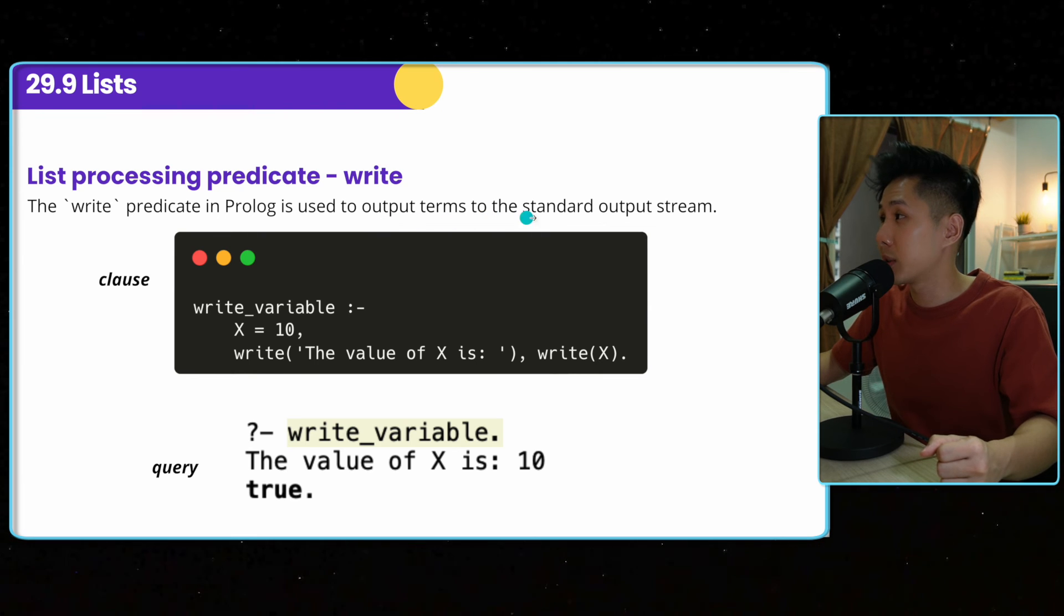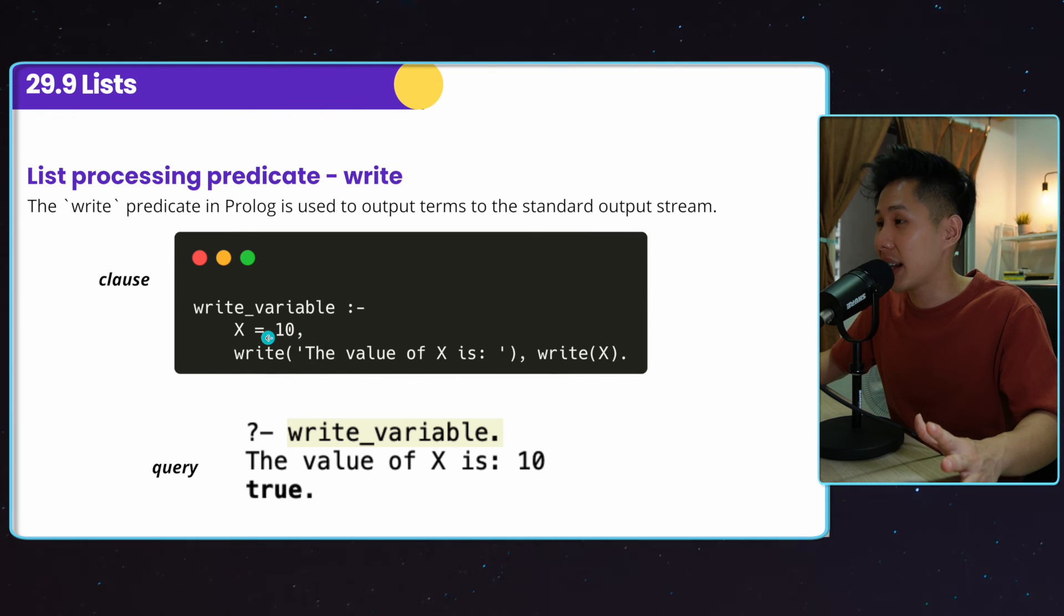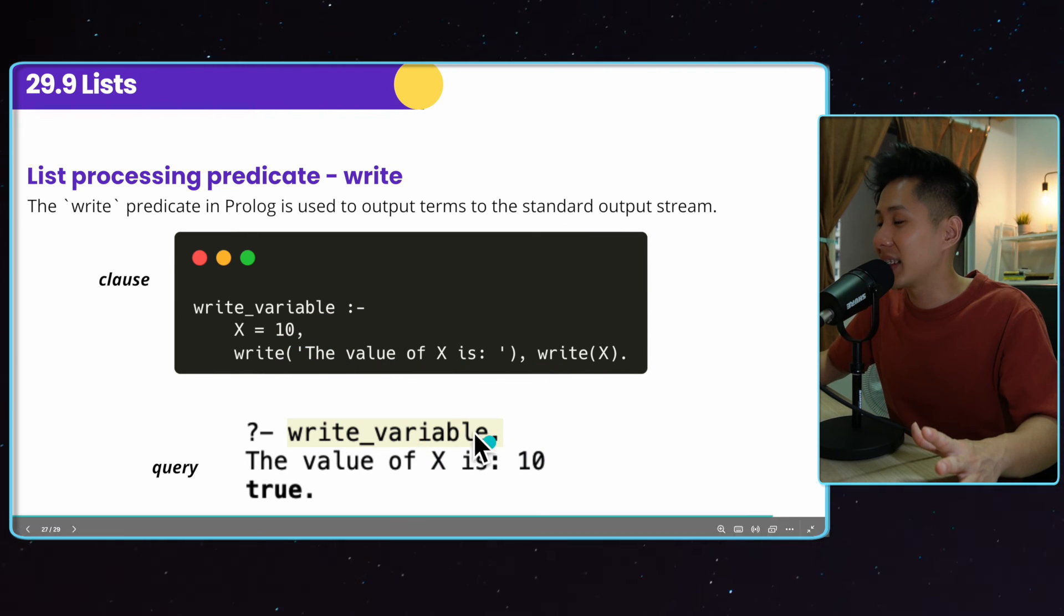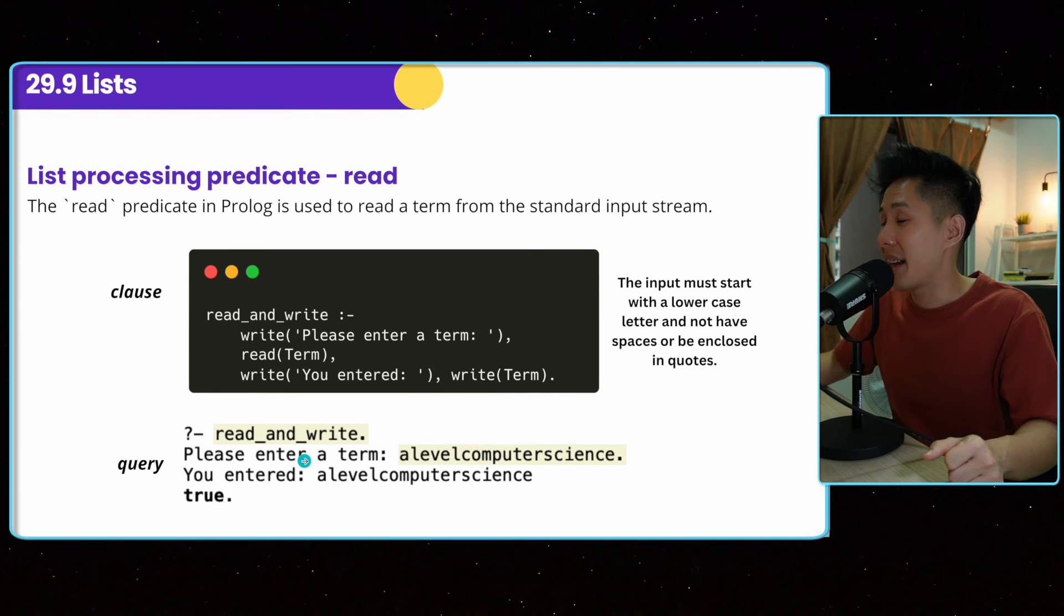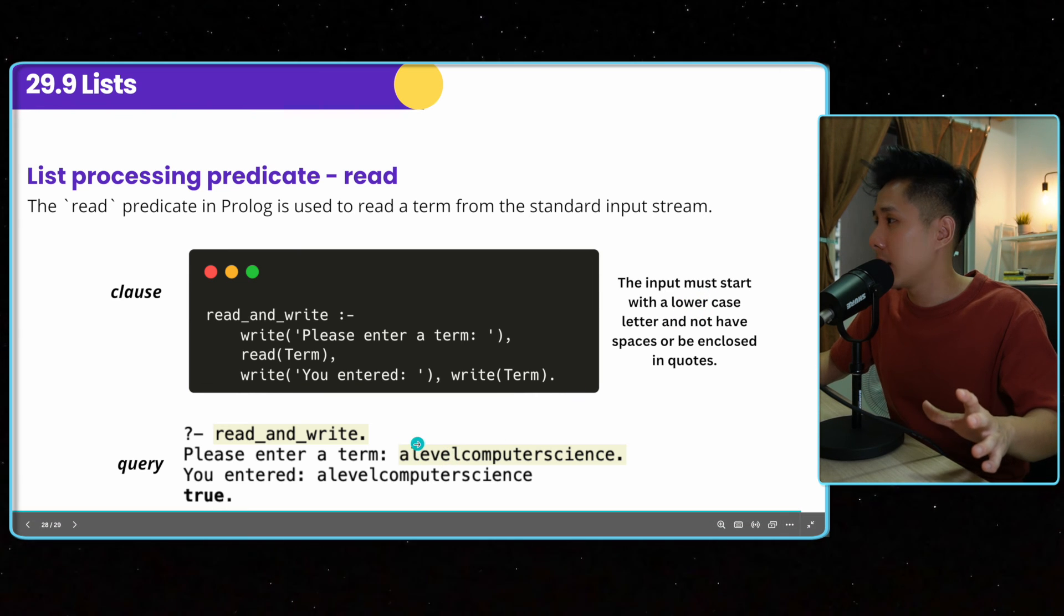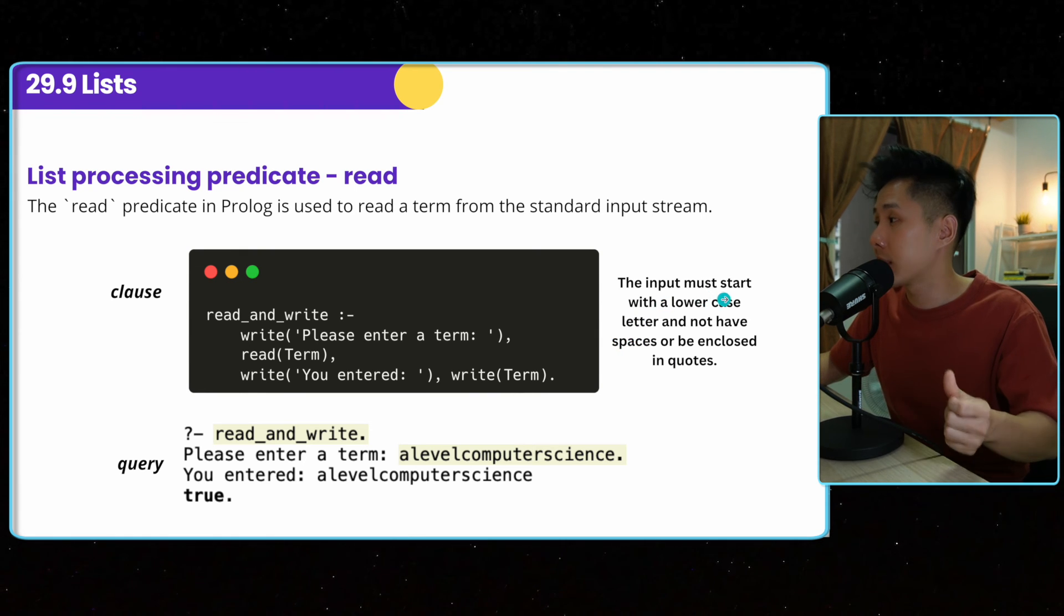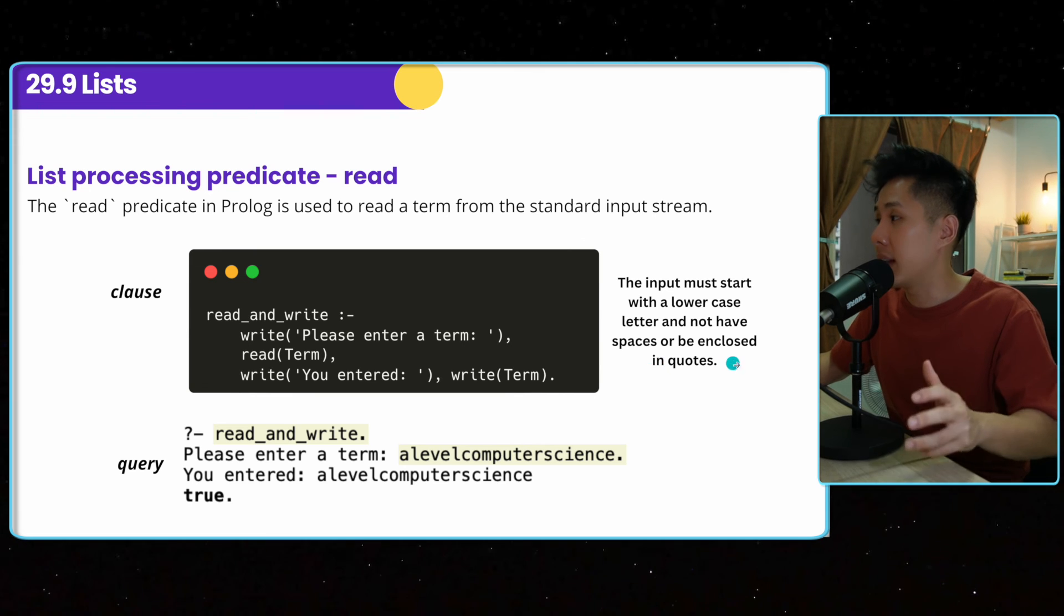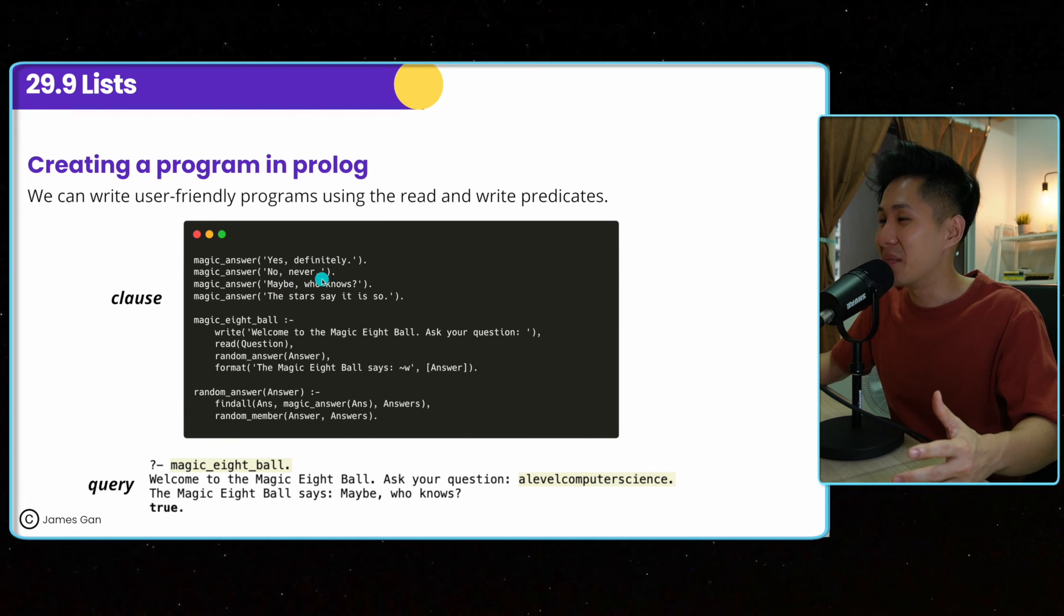The write predicate in Prolog is used to output terms to the standard output stream. And this is how you print something in Prolog. It's quite not so straightforward as in Python. But that's just the syntax, write variable, if x equal to 10, write blah blah blah, write 10. And that's how you print something a different way. And you can also write a clause called read and write that can ask user for a term. And once you enter the term, and this code will just write whatever you have just written. Do remember that when I'm preparing this slide, I made a mistake. I use an uppercase letter, and I use spaces. And that's not accepted in Prolog. So the input must start with a lowercase letter, and not have spaces, or be enclosed in quotes.